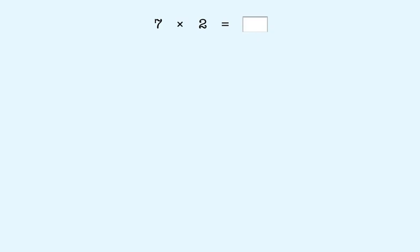For example, we'll use the pattern for multiplying by two here. To multiply seven by two, you add seven to itself and you get fourteen. So, seven times two equals fourteen.